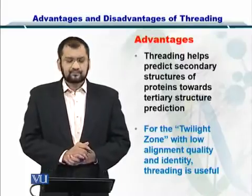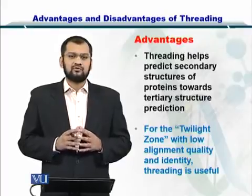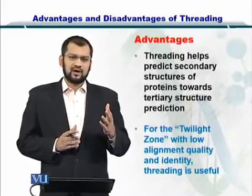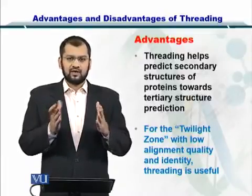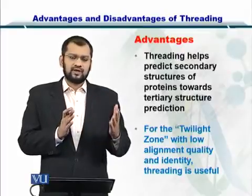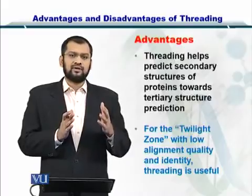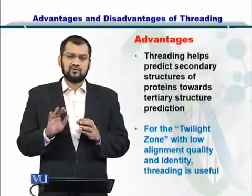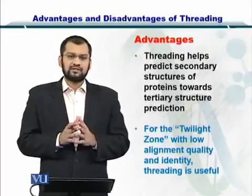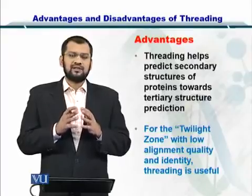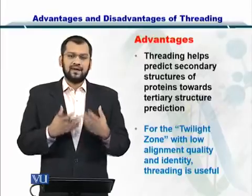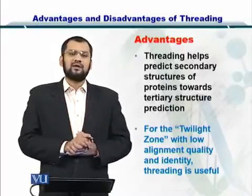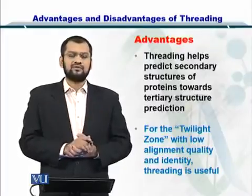Threading or fold recognition is an extremely useful strategy for predicting the tertiary structure of proteins. On one side we have homology modeling, and on the other side is ab initio modeling — threading is a compromise between the two. In homology modeling, we rely heavily on the template, while in ab initio we rely on energy minimization, which has nothing to do with the template. For fold recognition, we try to find the optimal secondary structures or folds best suited to your sequence, creating a mix and match from different folds taken as structural elements of the sequence being considered.